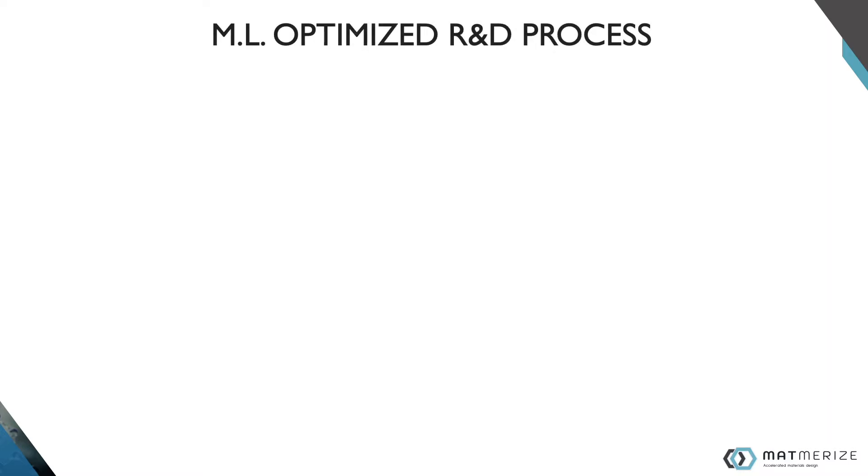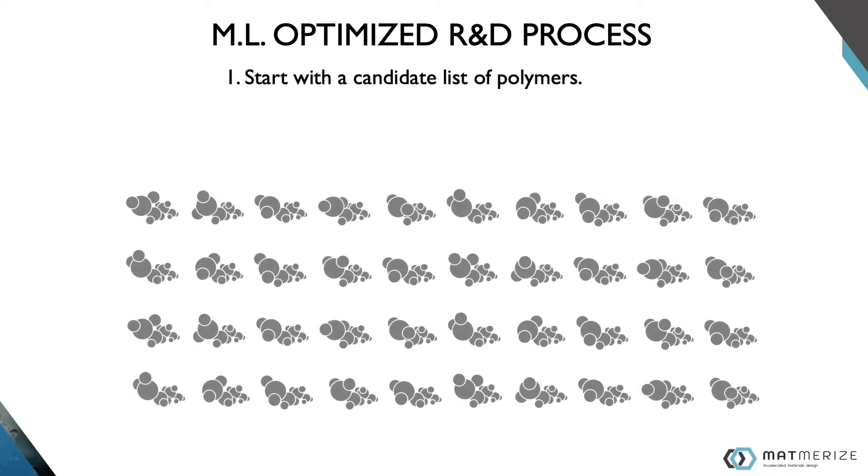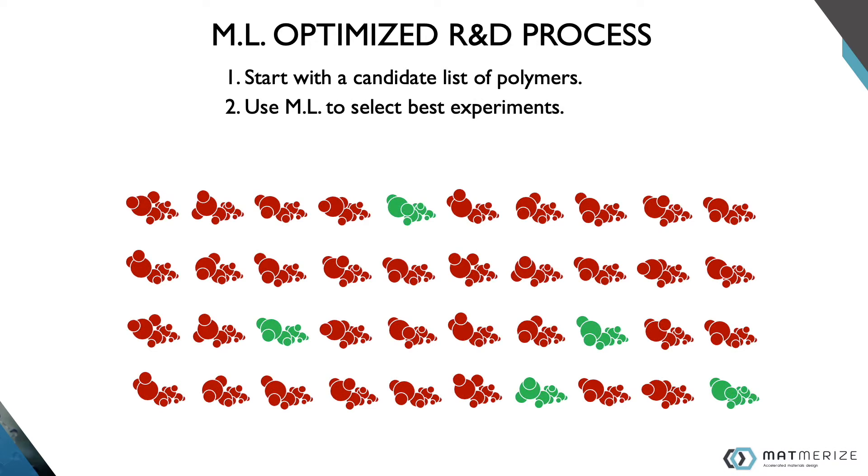Now let's take a look at a version of this R&D process optimized by machine learning. Once again, you start with a very large list of candidate polymers. But this time, you replace costly experiments in the lab with cheap virtual experiments using machine learning. You're able to narrow down the number of lab experiments to only the most promising candidates.